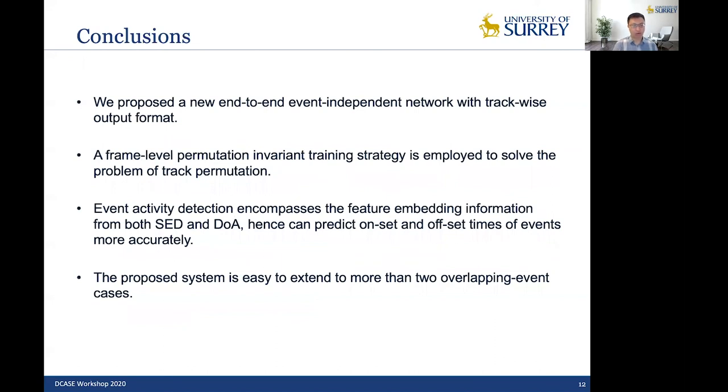And then we have our conclusions here. So we proposed a new end-to-end event independent network with trackwise output. And we use a frame level permutation invariant training to solve the problem of track permutation. We also use event activity detection to encompass the feature embedding information from both SED and DOA. So hopefully it can predict onset and offset times more accurately. And the proposed system is easy to extend to more than two overlapping event cases.